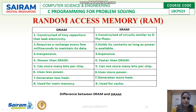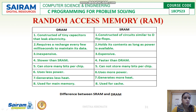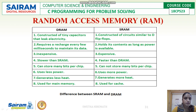RAM has two types: DRAM and SRAM. DRAM is constructed using tiny capacitors that leak electricity, while SRAM is constructed using circuits similar to D flip-flops. DRAM requires a recharge every few milliseconds to maintain data; SRAM holds its content as long as power is available. DRAM is inexpensive whereas SRAM is expensive. SRAM is faster than DRAM. DRAM can store many bits per chip while SRAM cannot. DRAM uses less power and generates less heat than SRAM. DRAM is used for main memory; SRAM is used for cache memory.